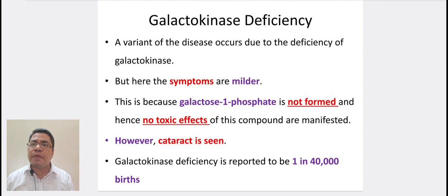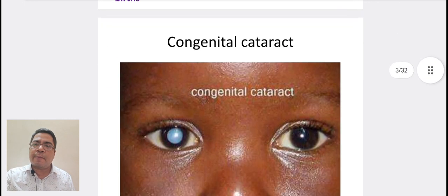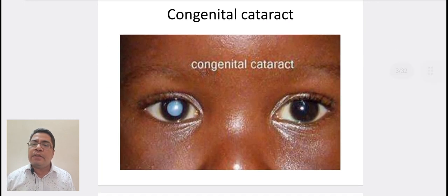Galactokinase deficiency: A variant of the disease occurs due to the deficiency of galactokinase, but here the symptoms are milder. This is because galactose-1-phosphate is not formed and hence no toxic effects of this compound are manifested. However, cataract is seen. Galactokinase deficiency is reported to be in 1 in 140,000 births. In this diagram, congenital cataract is seen on the right side due to galactokinase deficiency.